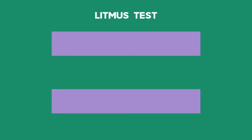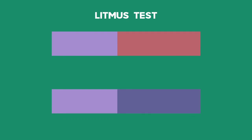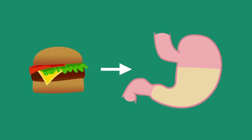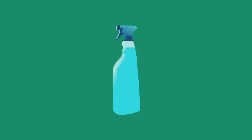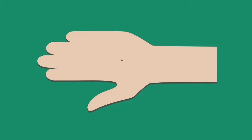Among the first reactions we learned about in school was an acid-base reaction where litmus paper changed color, depending on whether it was in an acid or a base. Acids and bases help dissolve our foods and clean our bathrooms, but also destroy the environment and burn our skin.